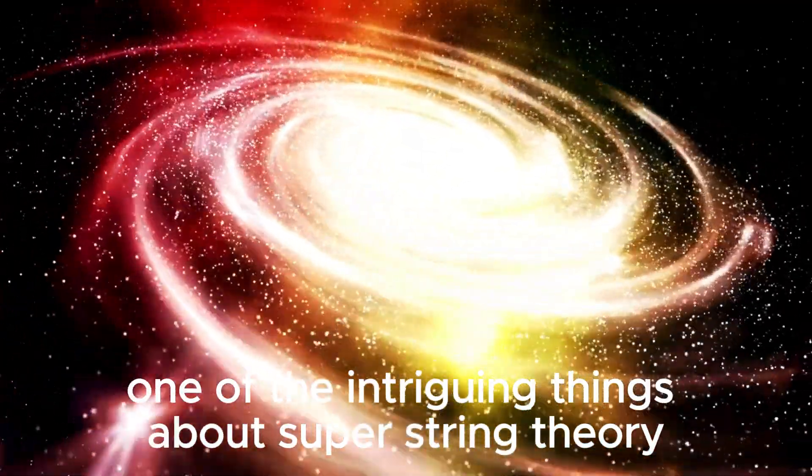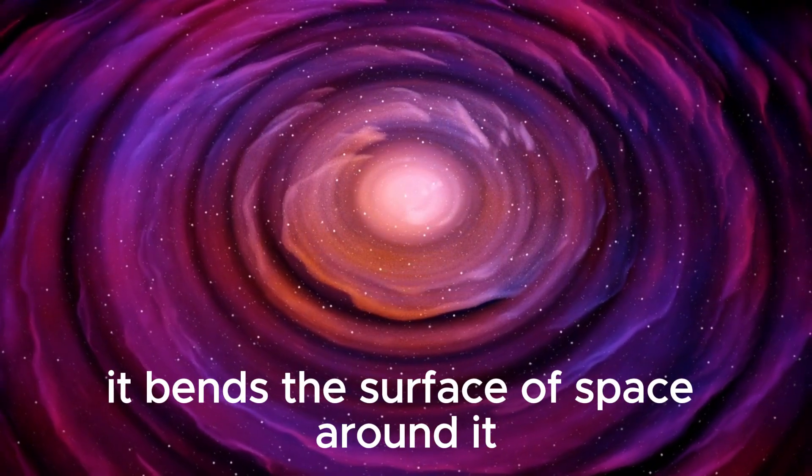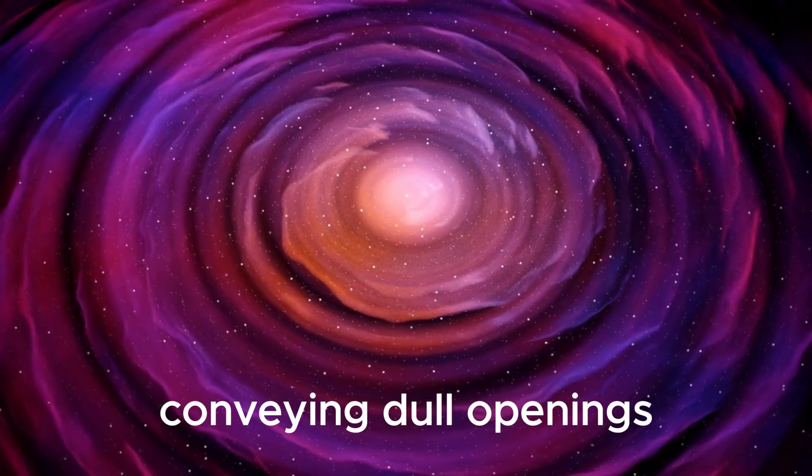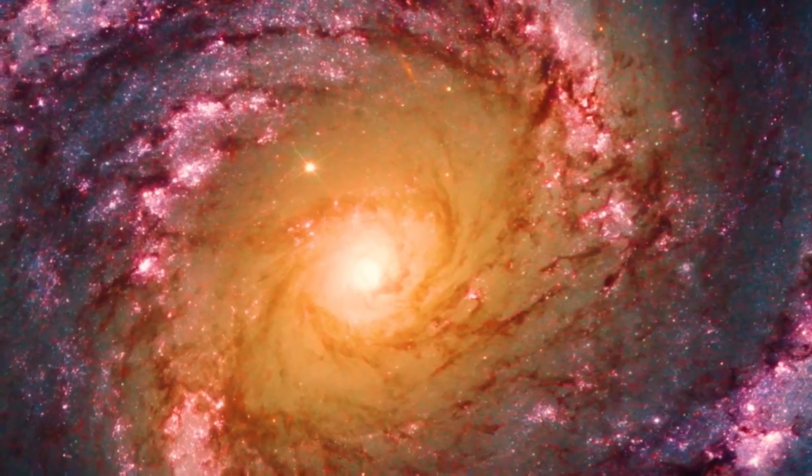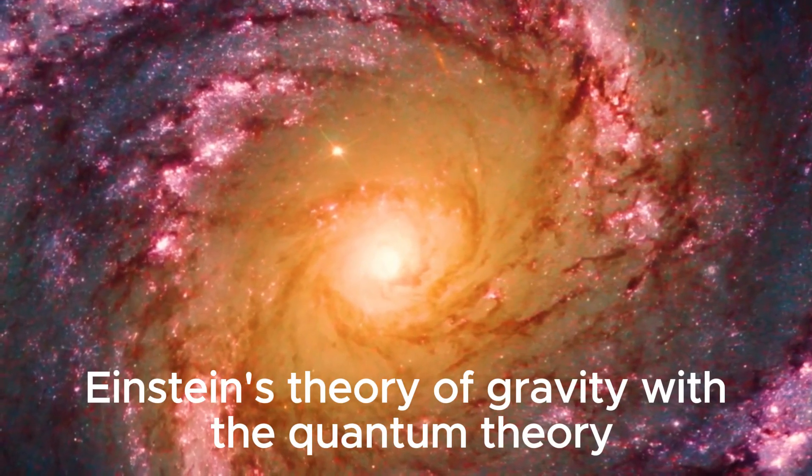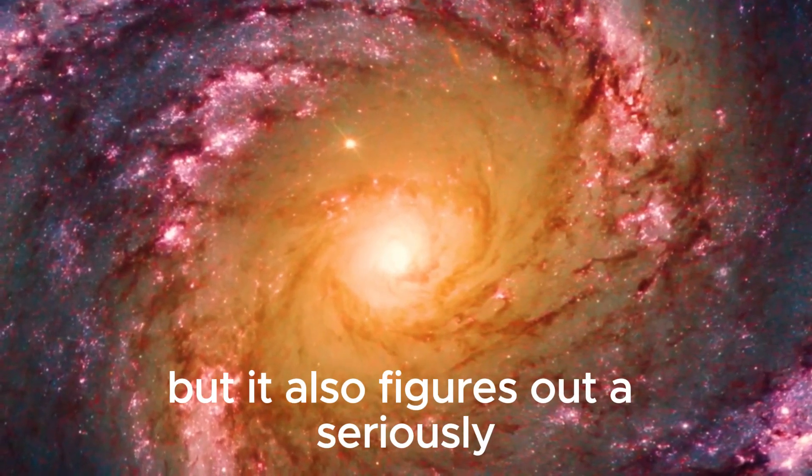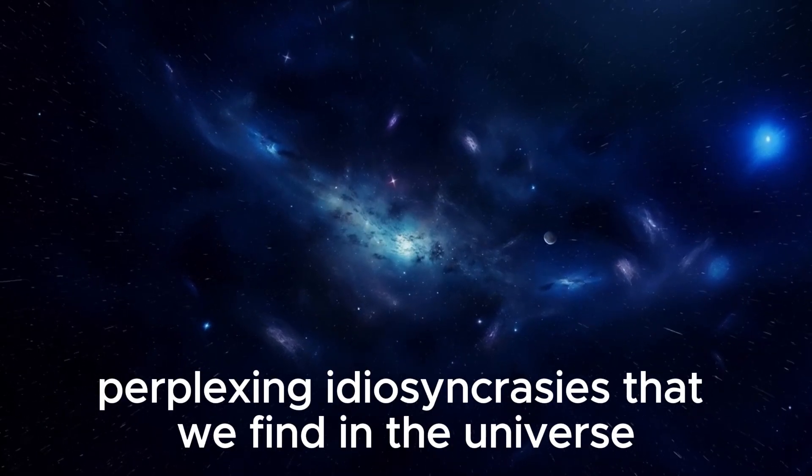One of the intriguing things about superstring theory is that as a string moves in time, it bends the fabric of space around it, creating black holes, wormholes, and other amazing structures. This means that superstring theory not only combines Einstein's theory of gravity with quantum theory, but it also explains many of the perplexing phenomena that we find in the universe.